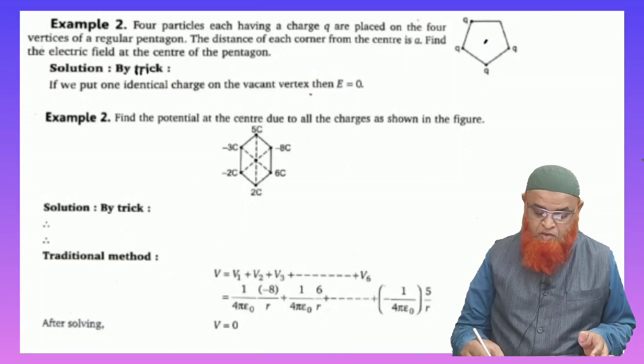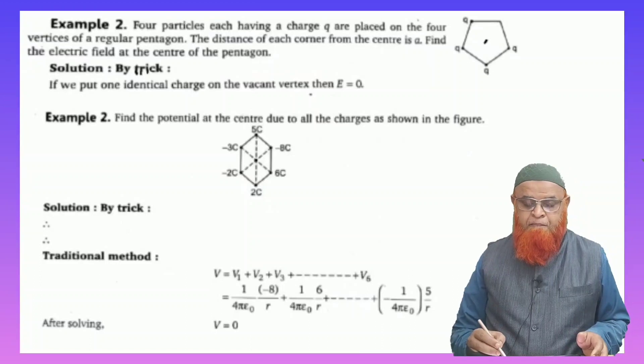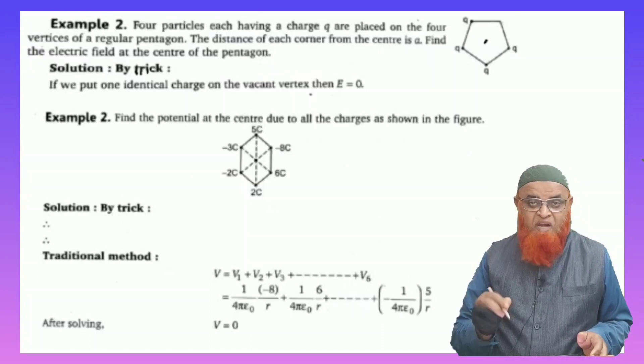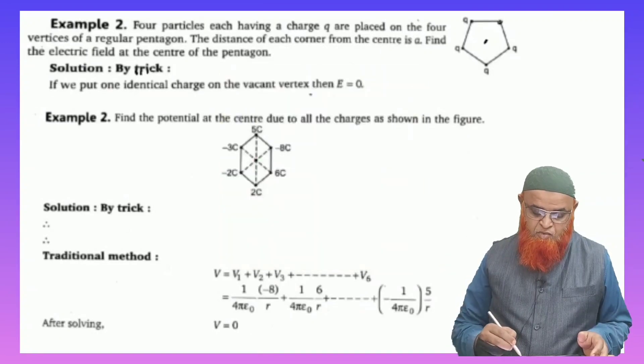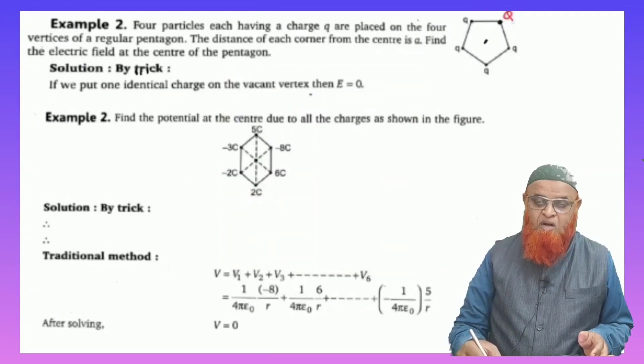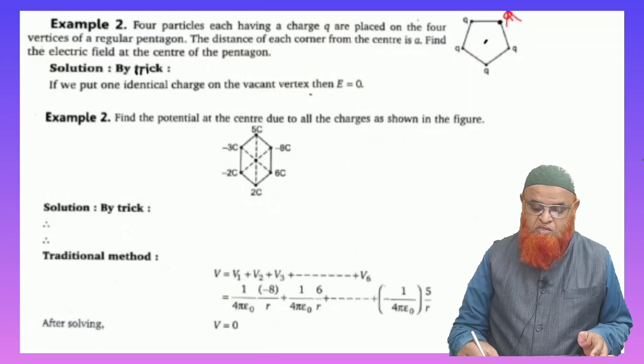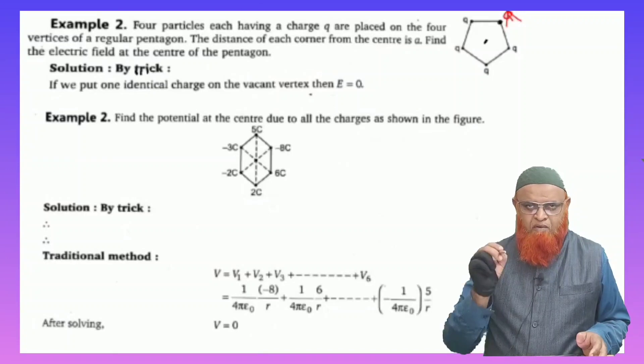At this place in a pentagon. Okay, so here, how many charges are there? Just four charges are there. Here there is no charge. You know about that, that there is no charge at one of the vertices. Okay, so this charge is not present. It is not present. Okay, so I will tell you the shortcut.